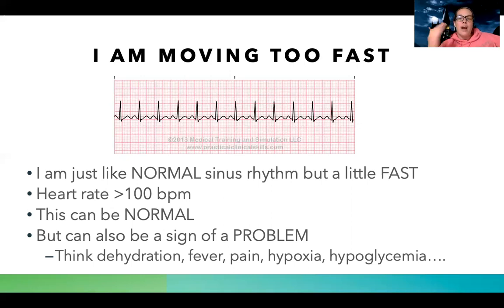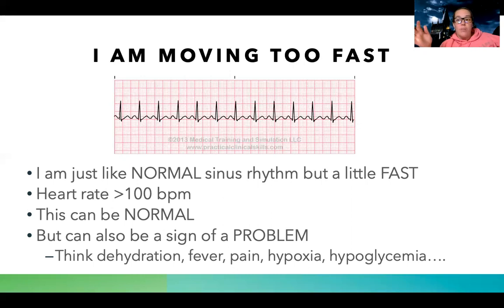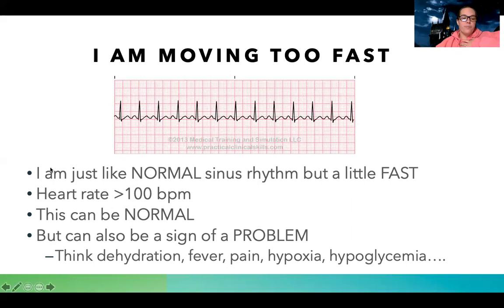If I do all that and all of those are normal and their heart rate is just fast, I can give medications like beta blockers or calcium channel blockers to slow down that heart rate and get it back to a normal rate.